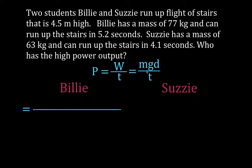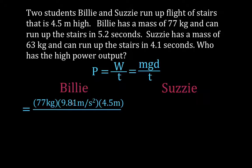For Billy, his mass is 77 kilograms multiplied by the acceleration due to gravity, so we can calculate the force he has to apply to lift his body up 4.5 meters. And he does that over a time of 5.2 seconds.